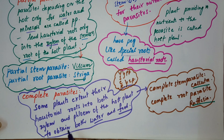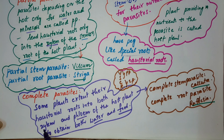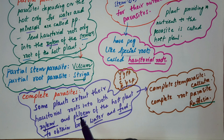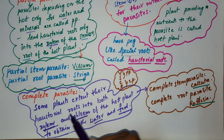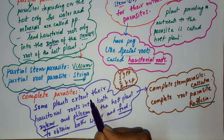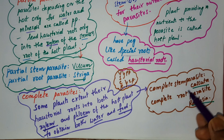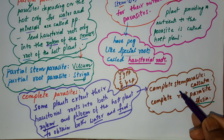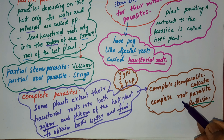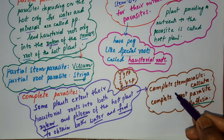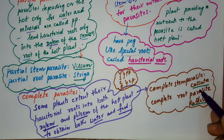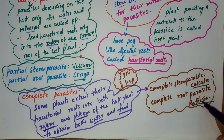Complete parasites depend on both phloem and xylem of the host plant for water, minerals, and food. They are called complete parasites. Complete parasites include complete stem parasites and complete root parasites.